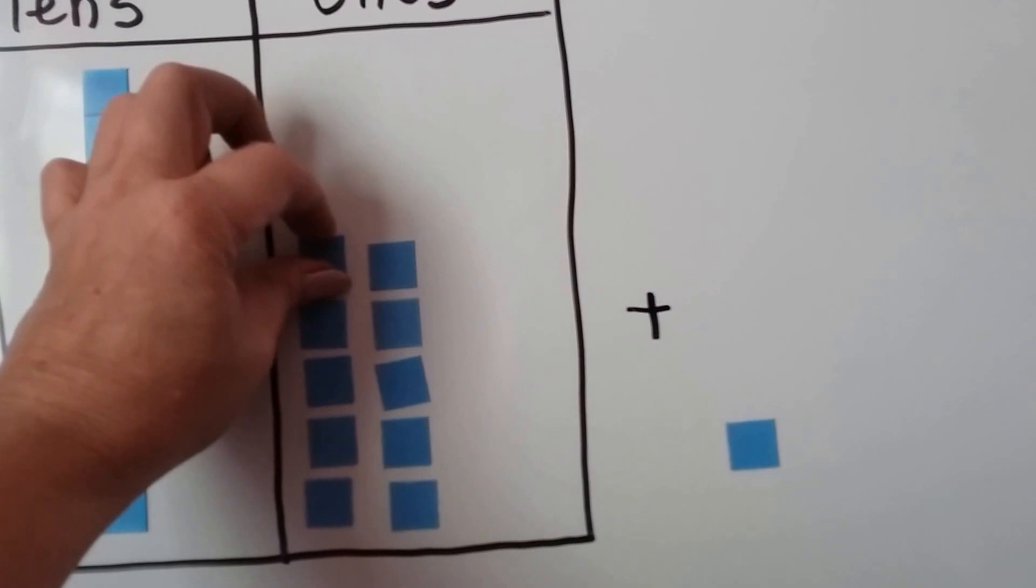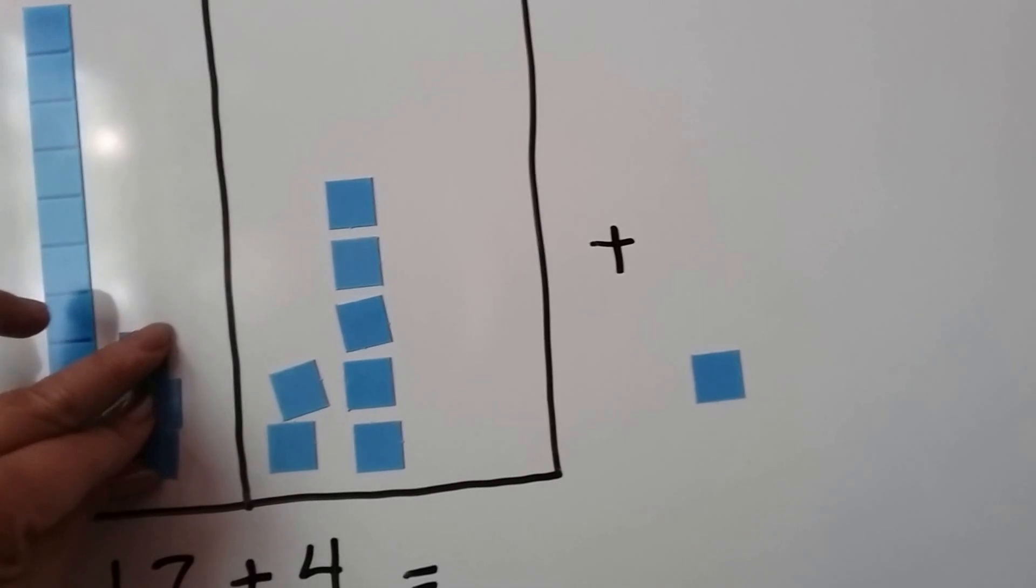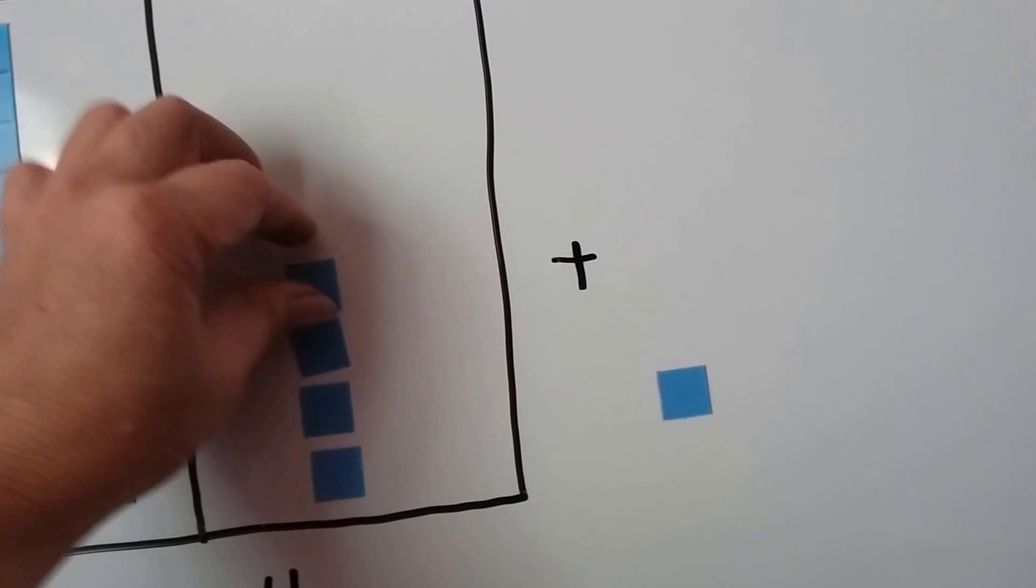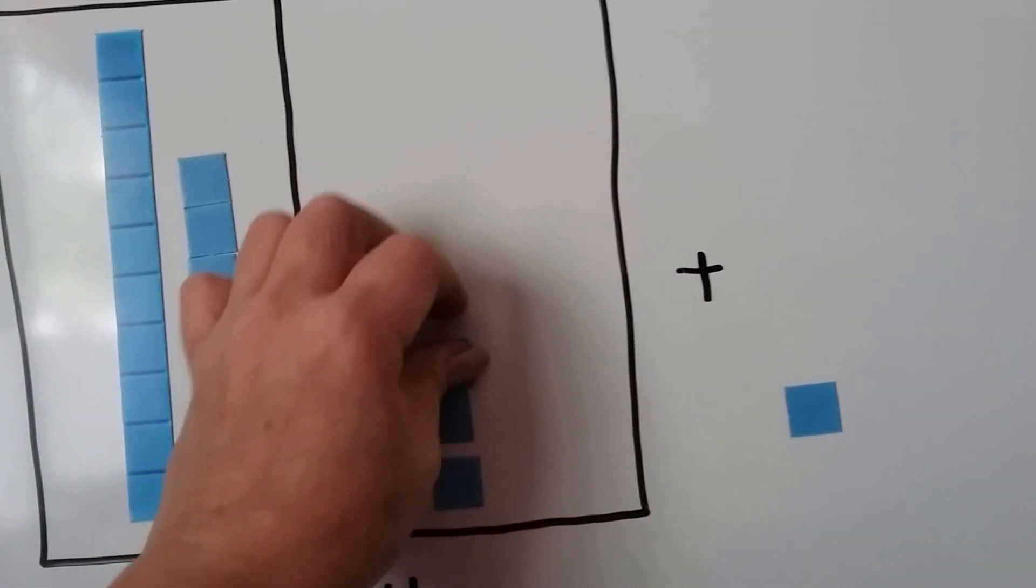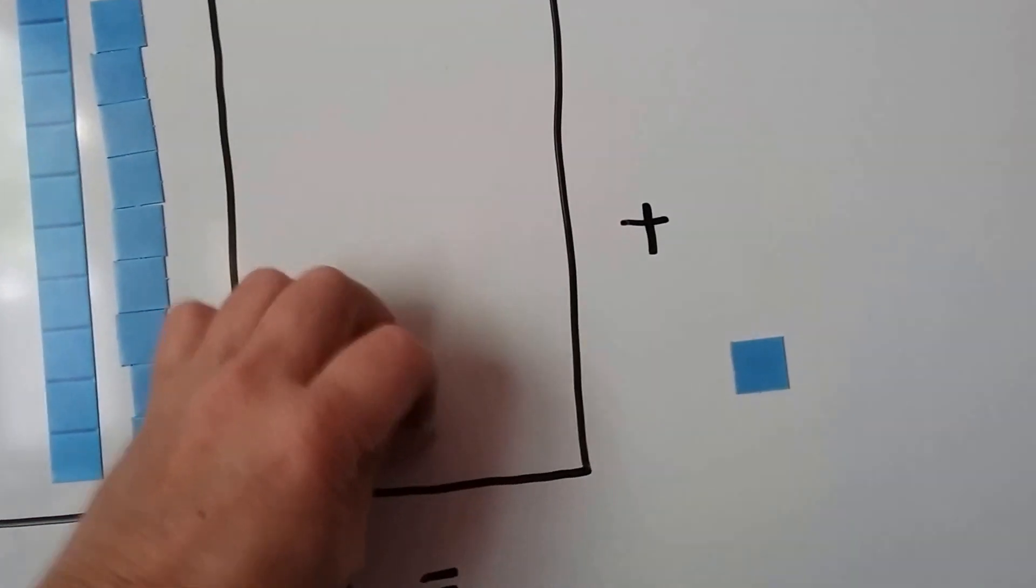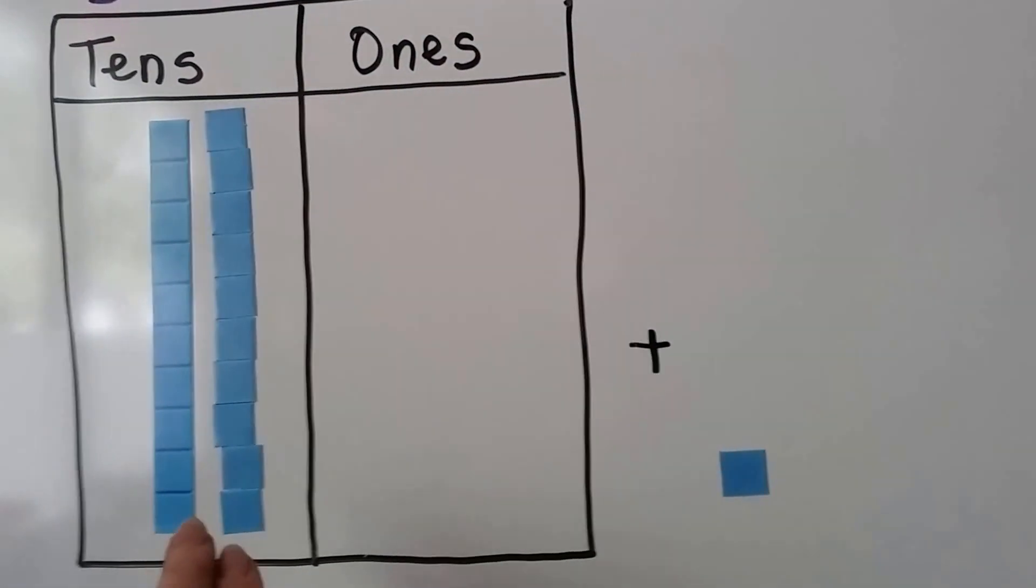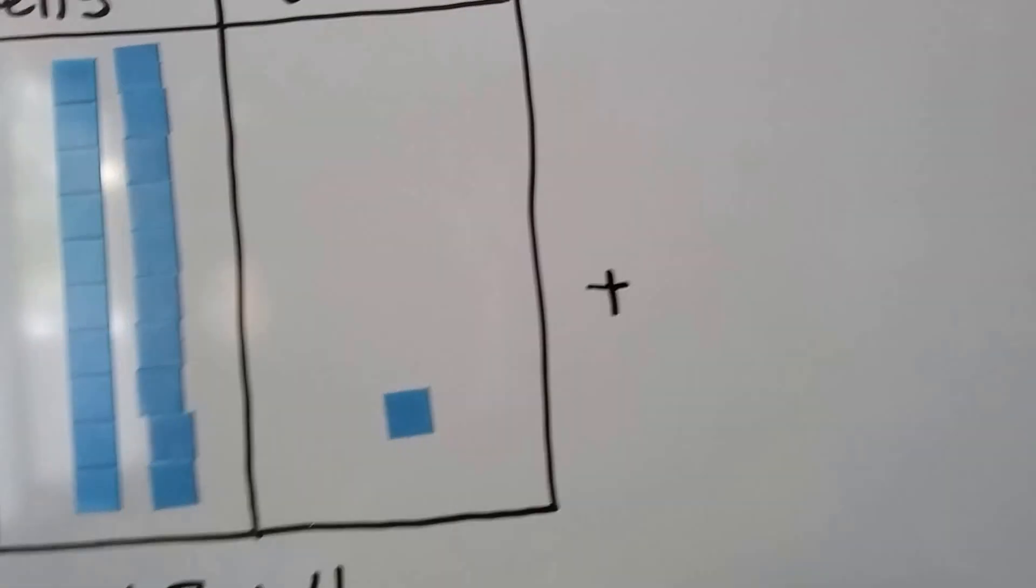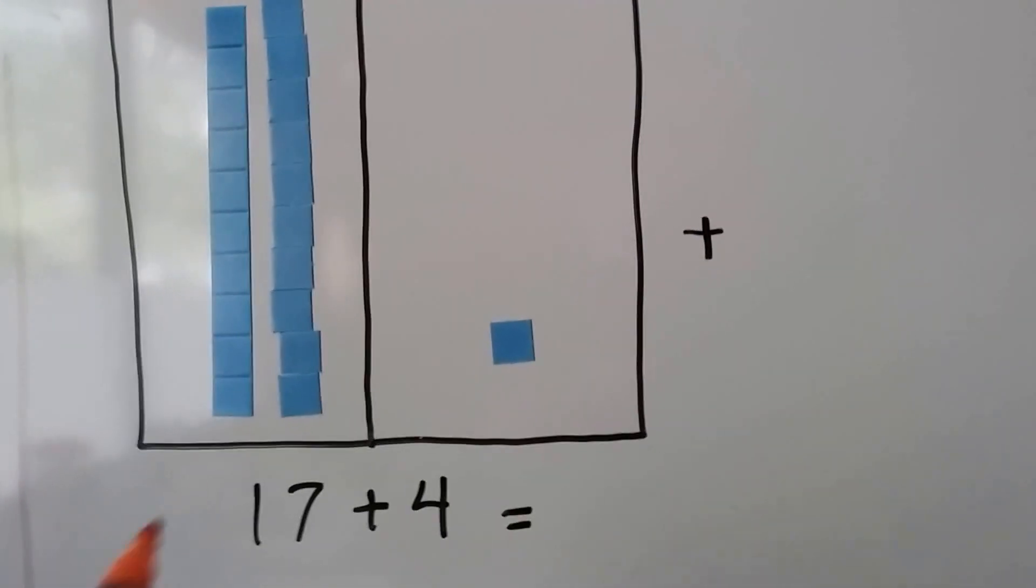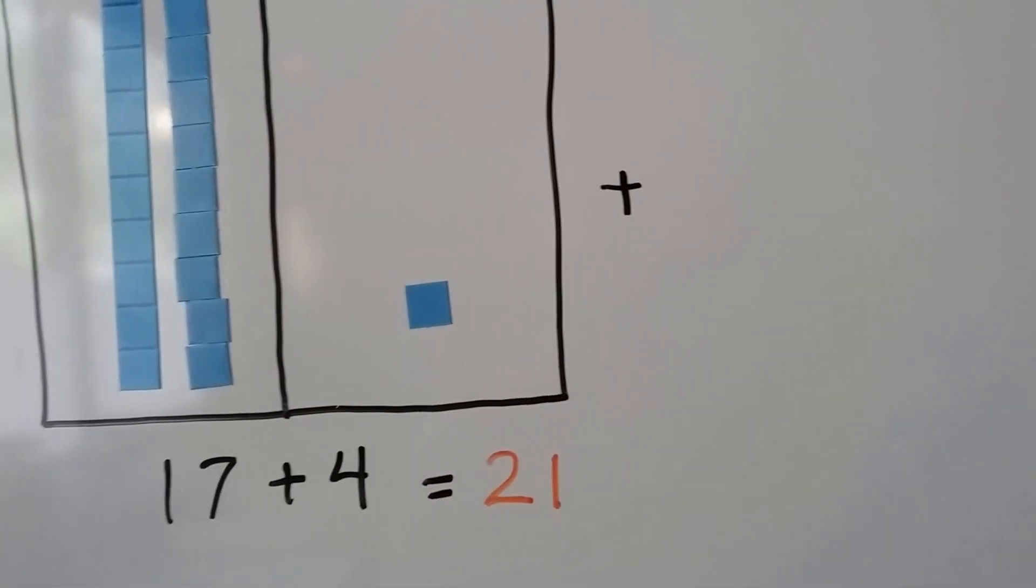Well, we can move this to the tens place, can't we? We move all of these to the tens place. We can make a long of 10 from these, can't we? We regroup all those ones that we made into a 10. We can put them in the tens place, and now we just have a 1 left over. See? So we have 2 tens and 1. That means 17 plus 4 is 2 tens and 1. It's a 21.